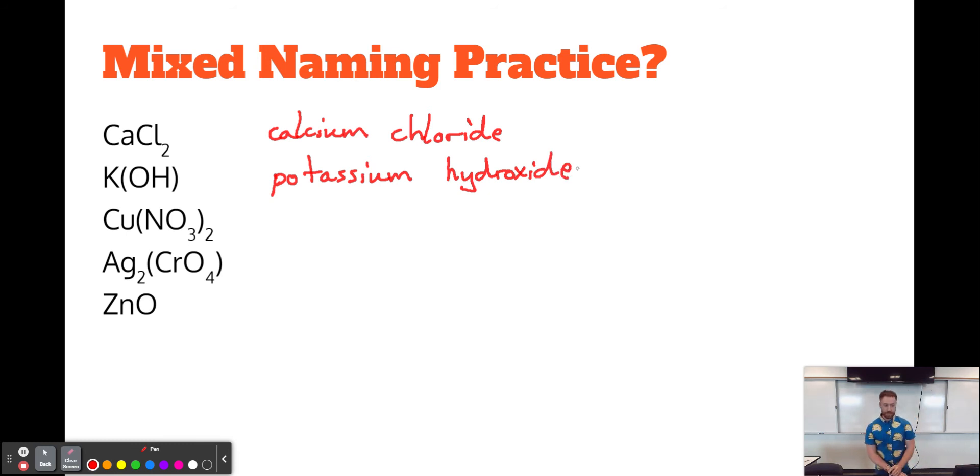The next is a little more interesting because copper Cu is a transition metal. It sits in this transition metal block, which means that we're going to need a Roman numeral after the name. And then NO3 is also a polyatomic ion. We're using all of the skills here. NO3 is nitrate. So we're dealing with copper nitrate.